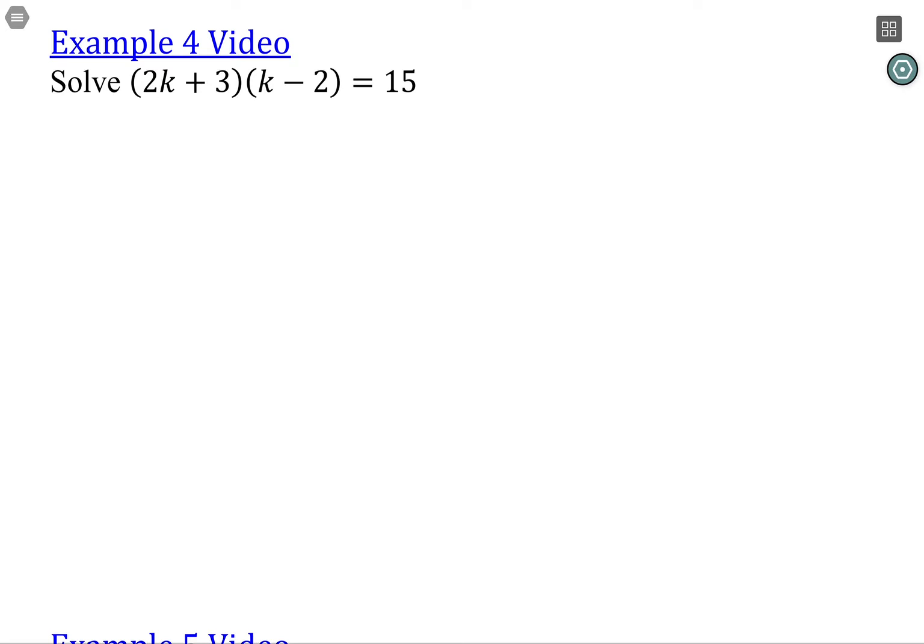The idea is it's not useful unless it's equal to zero. I'll go the other order from the last video here. We can subtract 15 from both sides, and that does make it equal to zero. Now that we have the 15 over there...